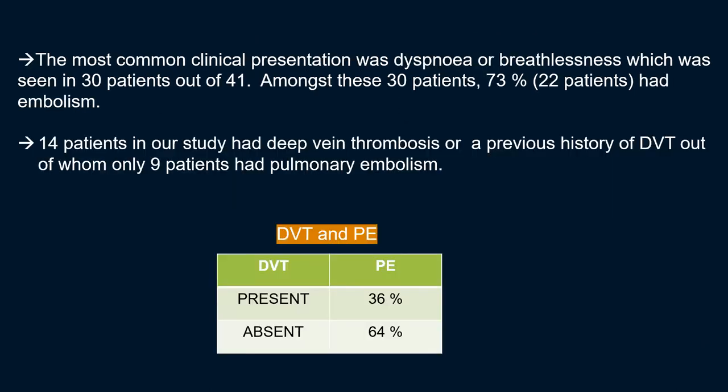The most common clinical presentation was dyspnea or breathlessness, seen in 30 out of 41 patients, of whom 73% had embolism. Fourteen patients had deep vein thrombosis or a previous history of DVT, of which only 9 had embolism. Among patients with DVT and pulmonary embolism, 36% had DVT, while 64% of pulmonary embolism patients did not have DVT.